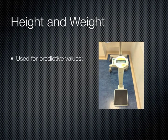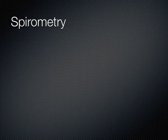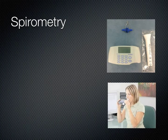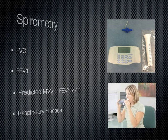The physiologist measures the patient's height and weight, which is inputted into the spirometer and test software. If the patient is over 150 kg or under 5 feet, the test might not proceed. The physiologist uses a spirometry test to determine the patient's forced vital capacity and forced expiratory volume in one second. These values are used to calculate the patient's predicted maximum voluntary ventilation and can help diagnose restrictive or obstructive lung disease.